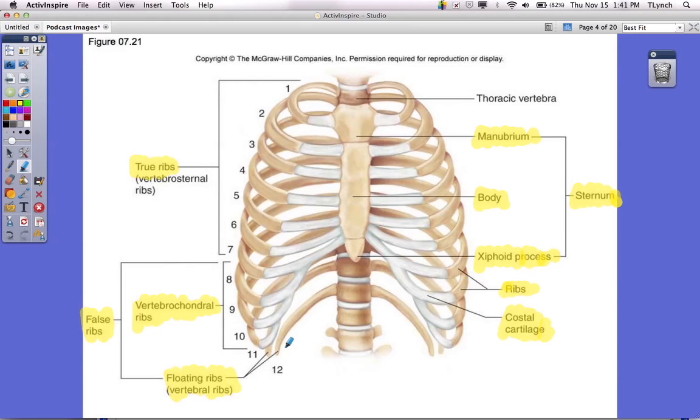But boys and girls, we both have 12 ribs on each side for a grand total of 24 ribs. I think that is everything you need to label on the thoracic cage. Next, we are going to move on to the scapula.